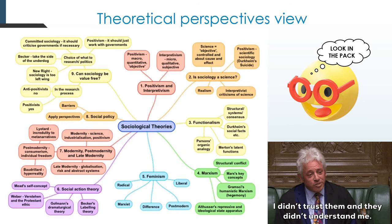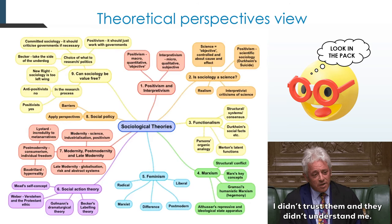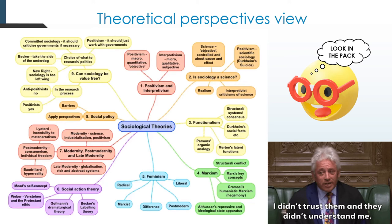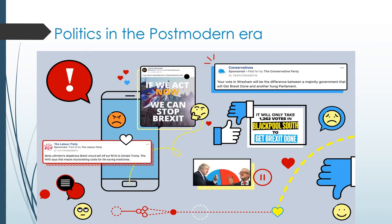Returning to theoretical perspectives — this is in your pack. What do the theories say about policies? As you might expect, the theory fits their worldview: Functionalism is probably very positive about policy for the good of society; Marxism says policies support the bourgeoisie; Feminism says policies support men. Take a look at what the theories have to say about policy using the mind map in your pack.